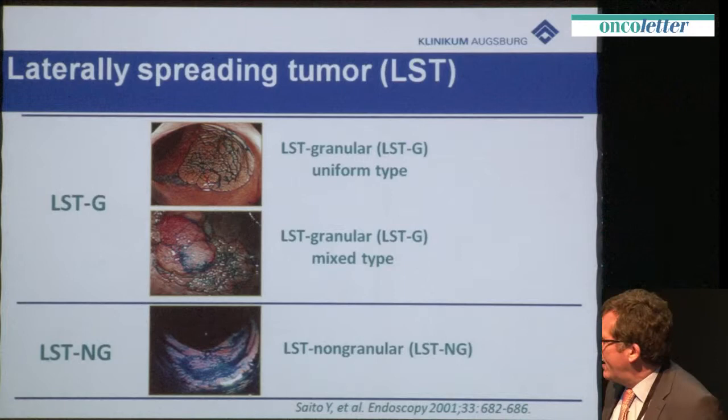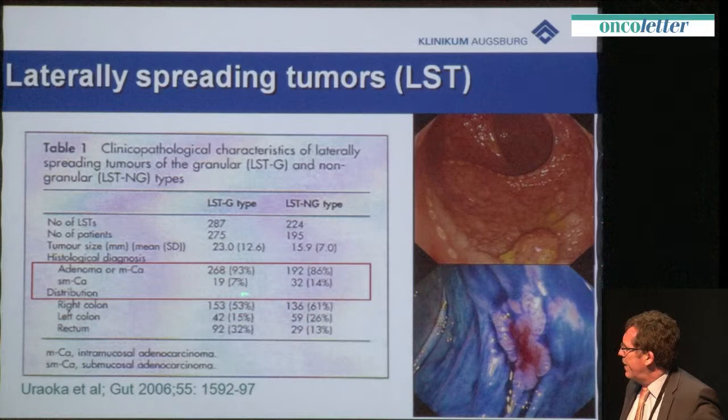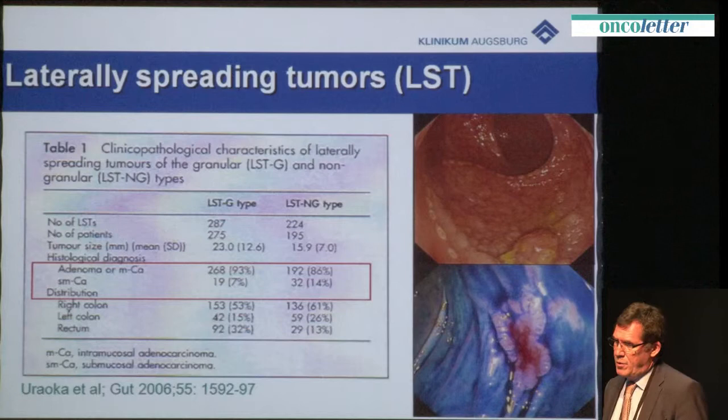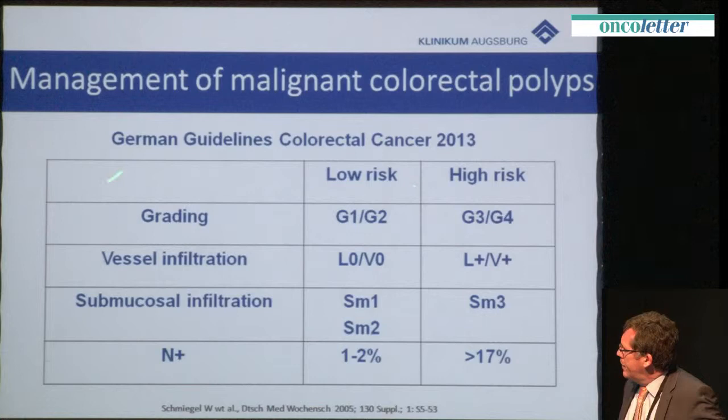We know from Japan, from Uruoka, that non-granular type lesions have a risk of about 14 to 20 percent to be invasive cancer. The invasiveness differs between SM1 and SM3. Therefore, we have guidelines in Germany to differentiate low-risk from high-risk situations, based on grading, vessel infiltration, and the submucosal infiltration depth of the tumor.